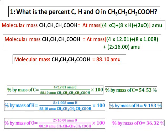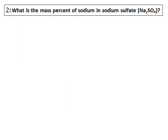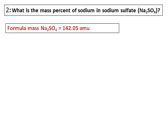For hydrogen, the number of hydrogen atoms is 8, therefore it is 8 times the atomic mass of hydrogen. Lastly, the number of oxygen atoms is only 2, and substituting the values we get the percent by mass of oxygen.